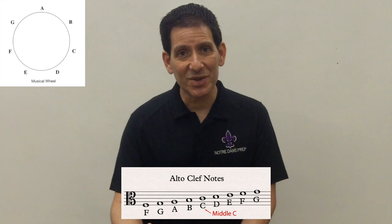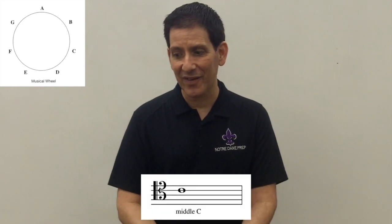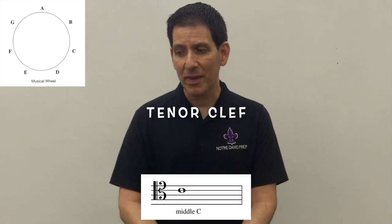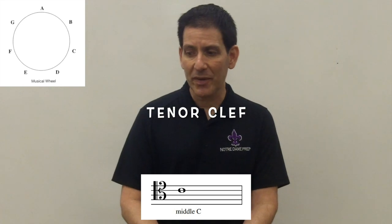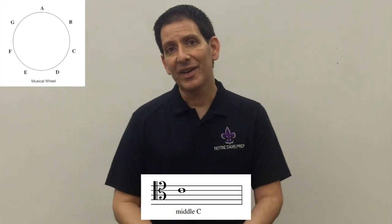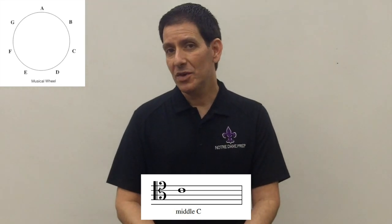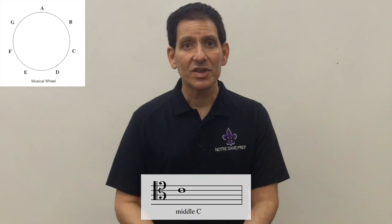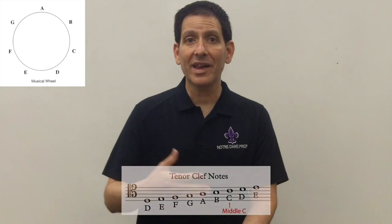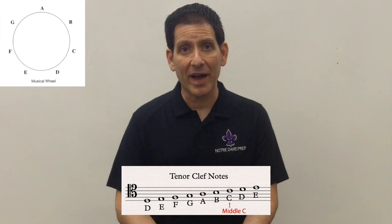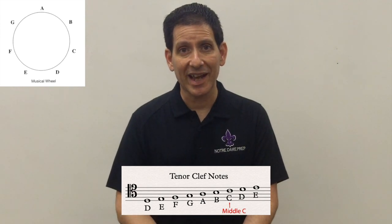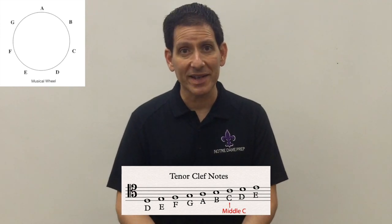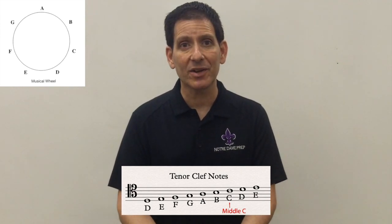That is also true for the next clef, which is the tenor clef. The tenor clef is used by the bassoon and the trombone. Again, those two sideway arches — the line in between them is middle C. We can count forward and backward from that middle C to figure out all the lines and spaces of the tenor clef.